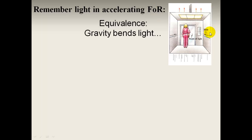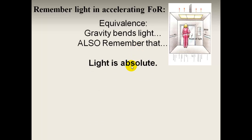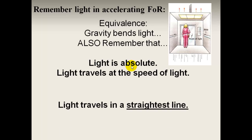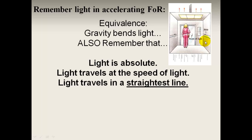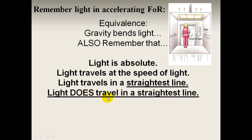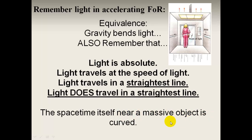From this we know that gravity bends light, using the idea of equivalence. But remember, light travels at the speed of light and in the straightest possible line — so how can its path be a curve? The fact is, light does travel in the straightest possible line. This line is curved because space-time itself is curved in a gravitational field. Space-time near a massive object is curved due to the presence of that mass or energy, which distorts the shape of four-dimensional space-time.